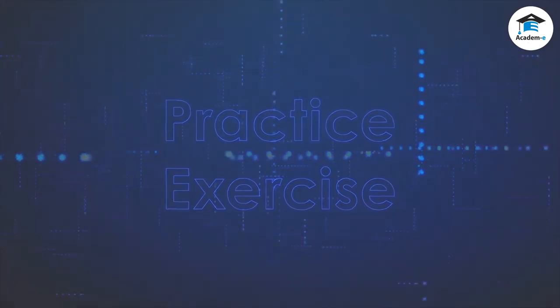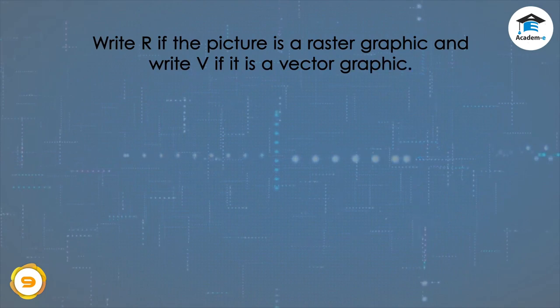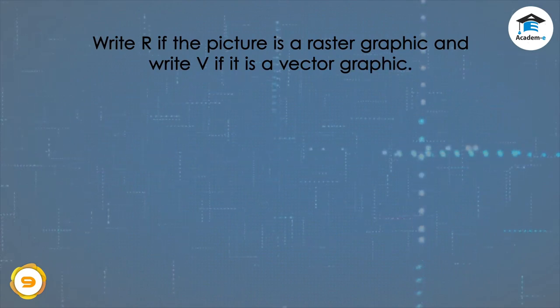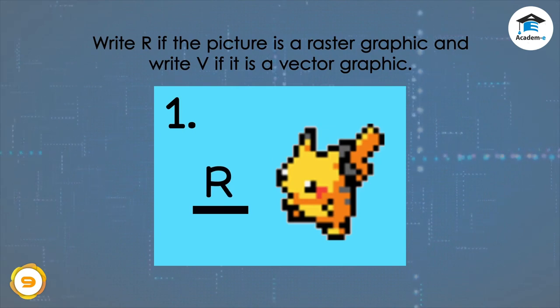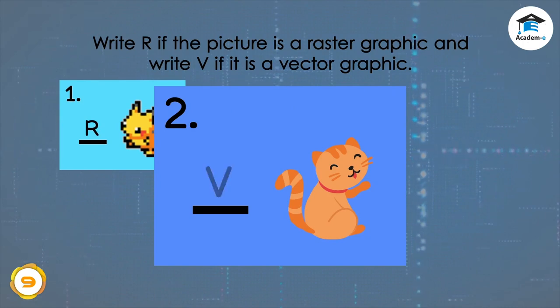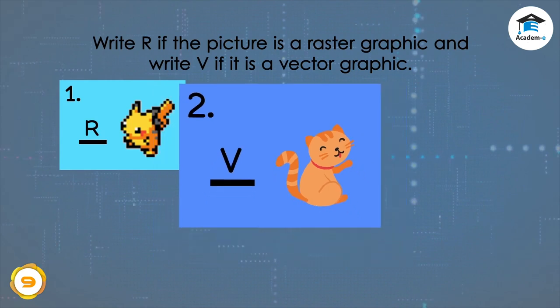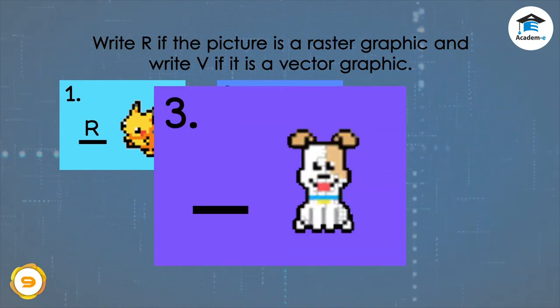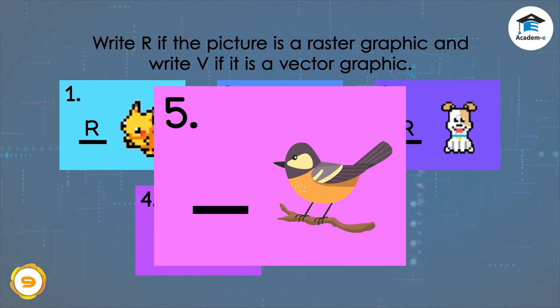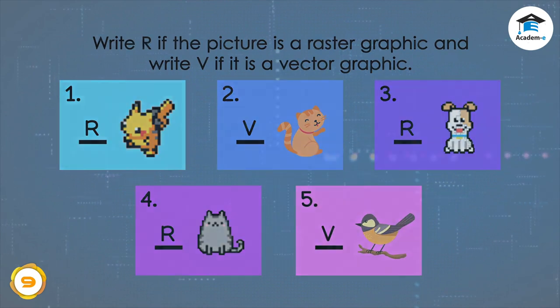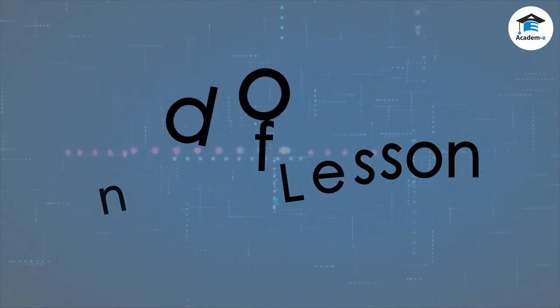Practice exercise: Write R if the picture is a raster graphic and write V if it is a vector graphic. Number one: This is a raster graphic. Number two: This is a vector graphic. Number three: This is a raster graphic. Number four: This is a raster graphic. Number five: This is a vector graphic.